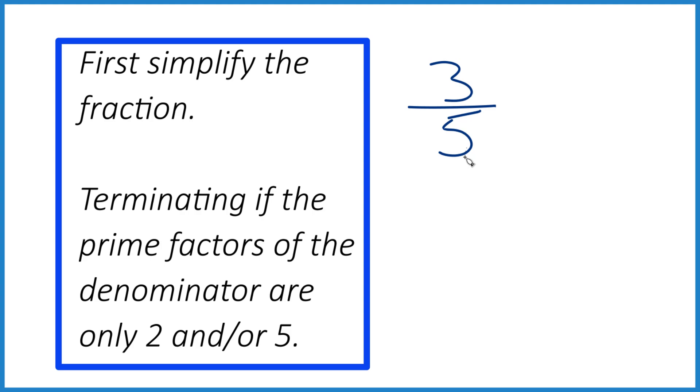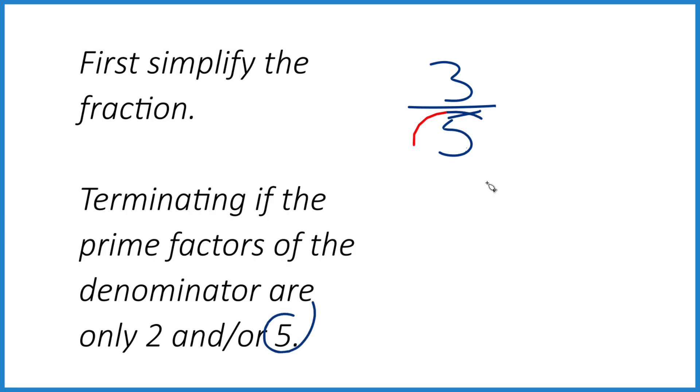It's already in simplest terms here. Then, if this number, the prime factors here, are 2 or 5, or 2 and 5, it's going to terminate. So we have our 5 here. That terminates.